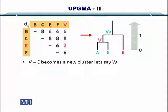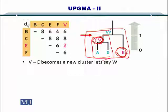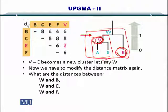Remember that A and D earlier combined into a cluster V, and now we are proposing to create a cluster between V and E, which we have named W. The distances that we are going to compute include W and B, W and C, and W and F. This process will be repeated until we have completed the tree.